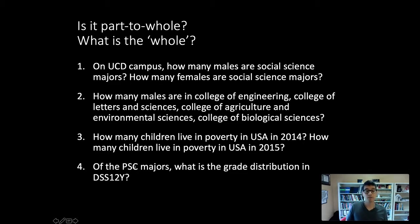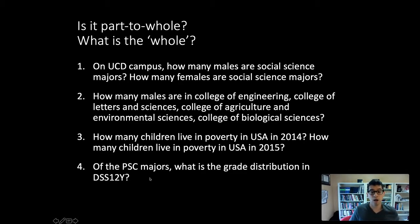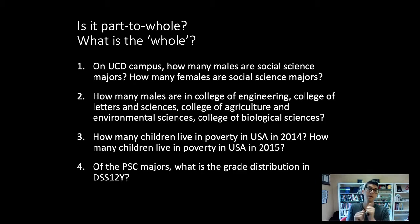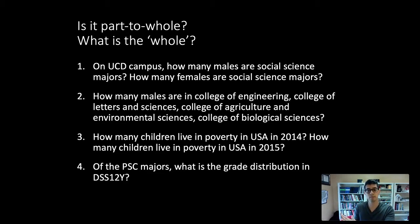The last one: of the PSC majors, what is the grade distribution in Division of Social Sciences 12Y? This would be a part-to-whole again. We could have a pie chart where the whole pie is all of the PSC students in 12Y, and the parts are the grades — a slice for A's, a slice for B's, a slice for C's. That would be a part-to-whole, where the parts are the different grades students are getting and the whole is the set of PSC majors in the class.